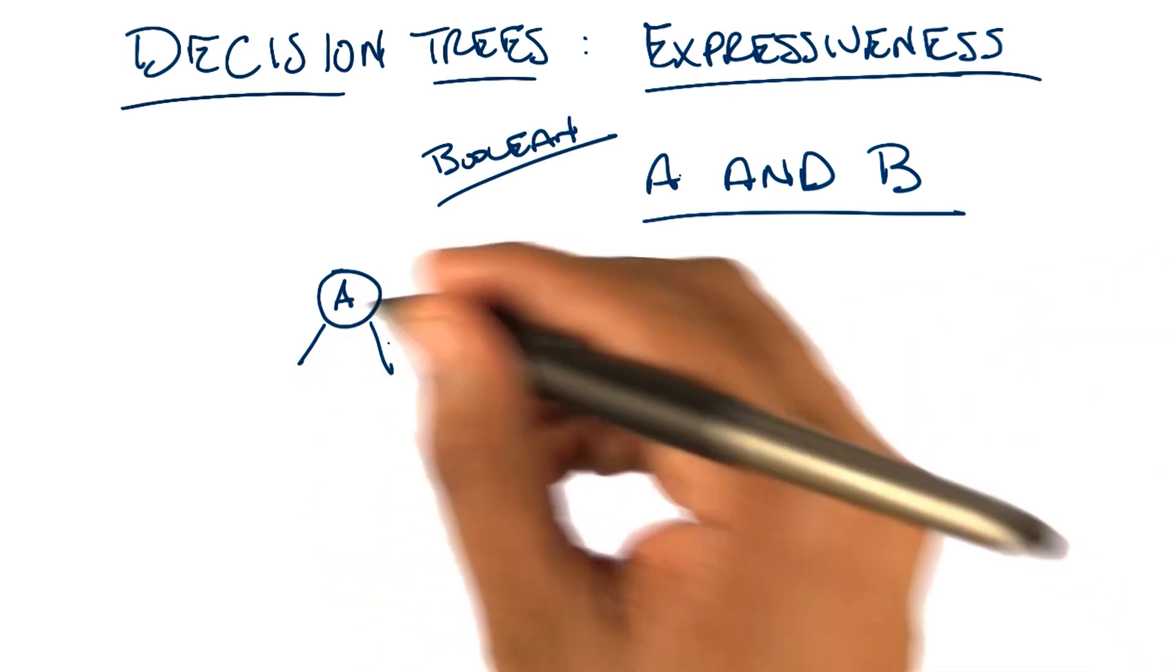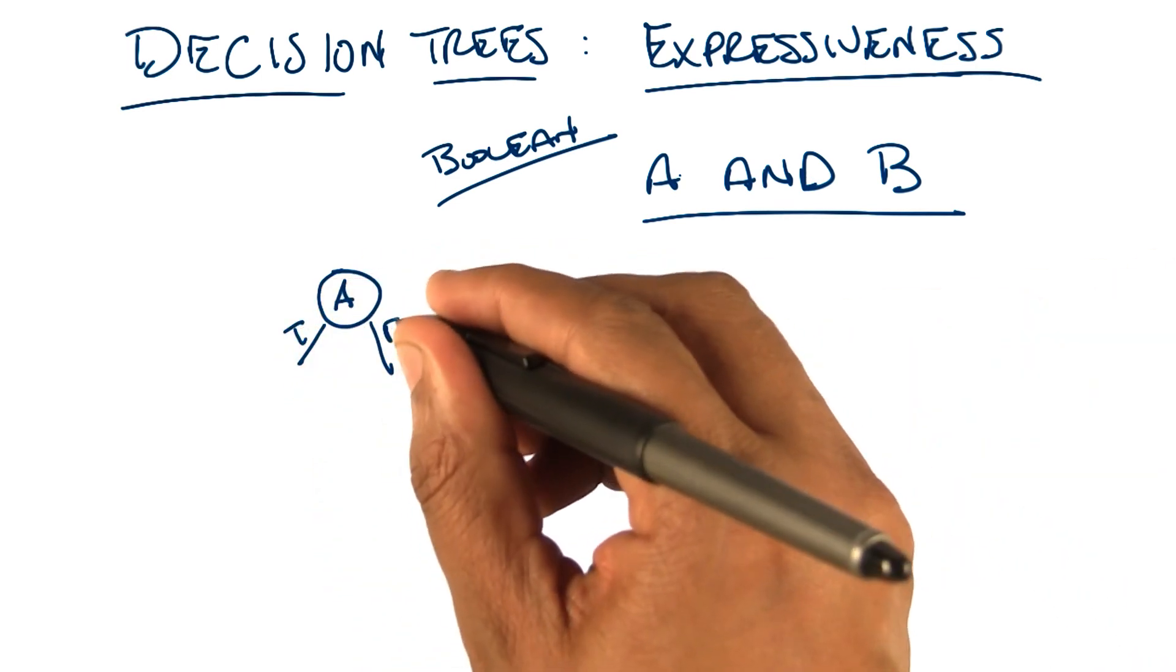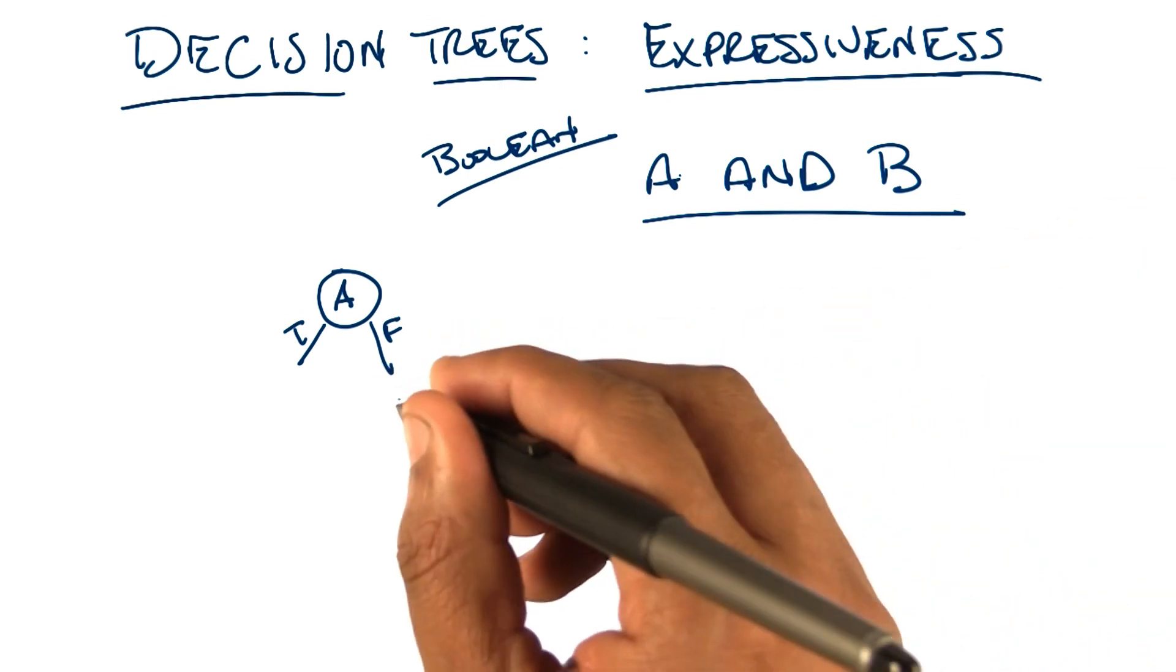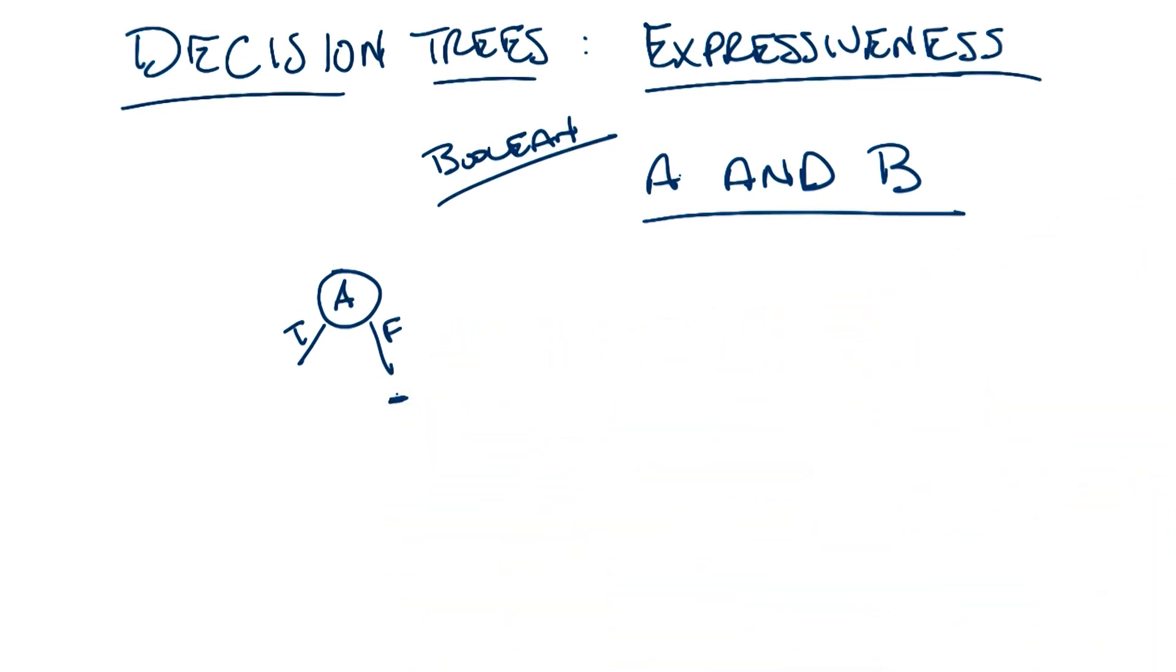All right, so how about true on the left and false on the right? Sure, as long as you label them. So all right, so then a, if a is true, okay I don't know. But oh, but if a is false, then we know that a and b must be false. It doesn't matter what b is. So we can just put a leaf under the f. That's correct. All right, I like that. Okay.